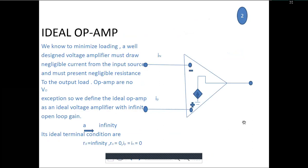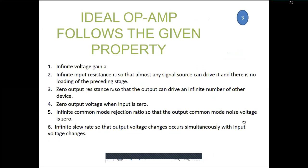Ideal op-amp and practical op-amp are two different cases. Ideal op-amp is completely based on theoretical aspects. An ideal op-amp follows these properties: infinite input voltage gain, infinite input resistance, zero output resistance, zero output voltage when input is zero, infinite common mode rejection ratio — meaning the op-amp has the ability to detect and reject signals common to both terminals — and infinite slew rate, which is the rate of change of output with respect to change in input.